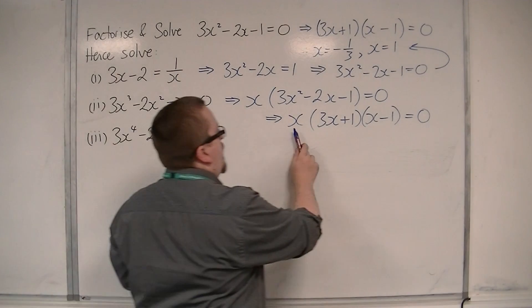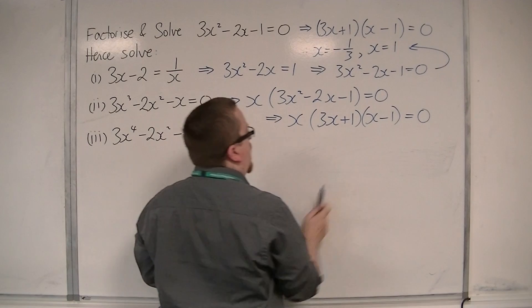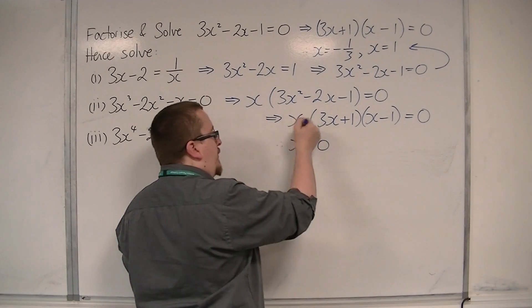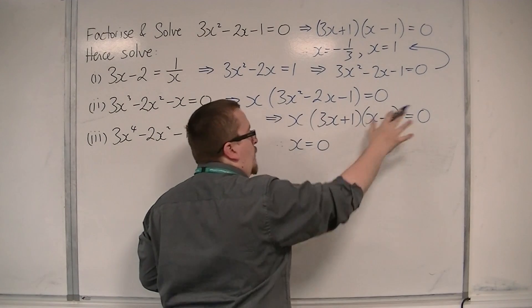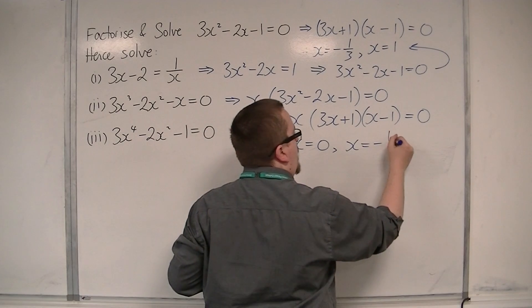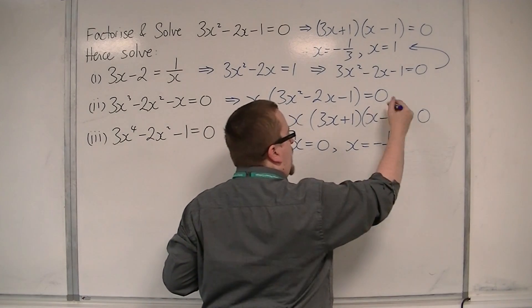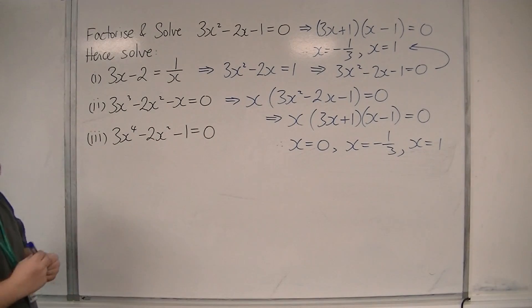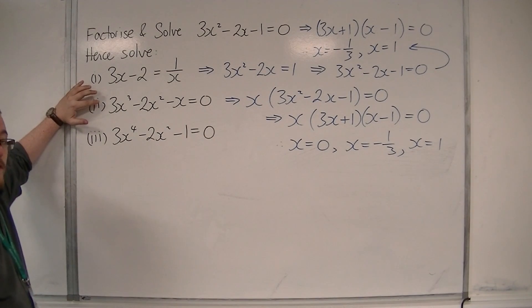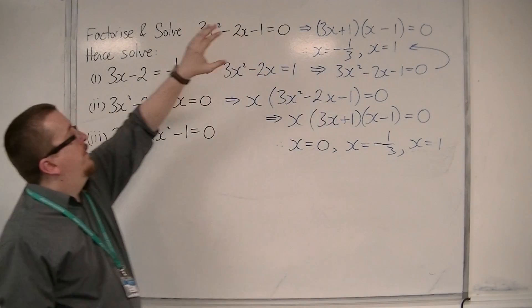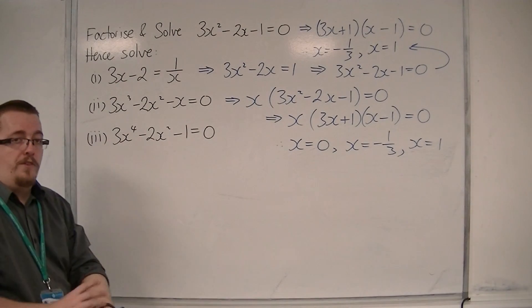In order for this to be 0, either x is 0, because if x is 0, then the whole thing is 0, or x is minus 1 third from that bracket, or x is 1 from that bracket. And so, this equation has three solutions: 0, minus 1 third, and 1. And, we used the original problem in order to solve it.